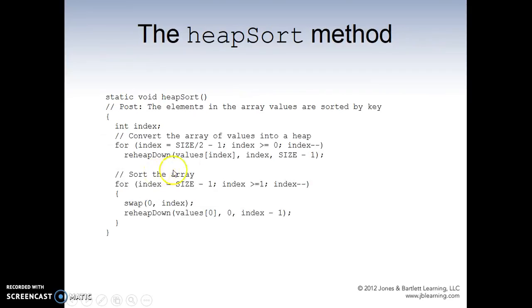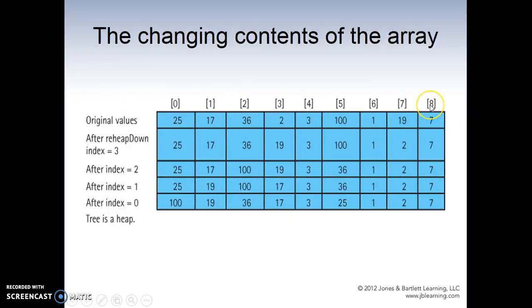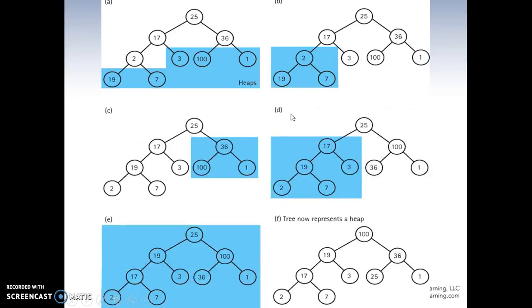So if you look back to the array, we say size divided by 2 minus 1. 8 divided by 2 is 4, minus 1 is 3. So we start from that, which is 2, which is right there.